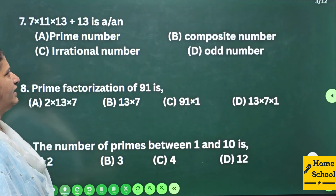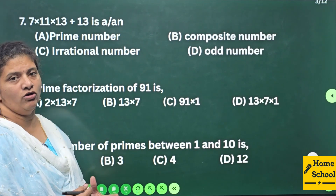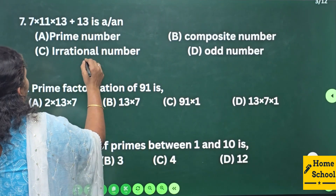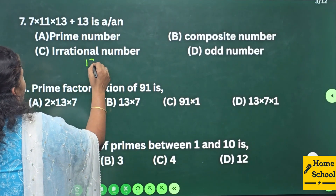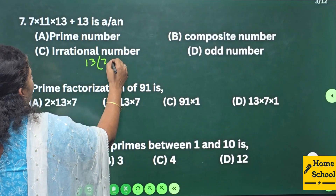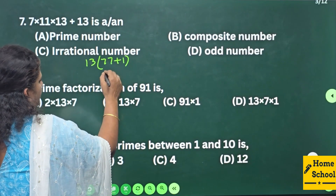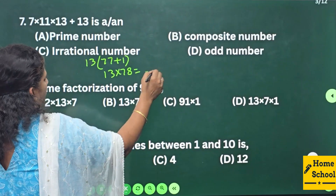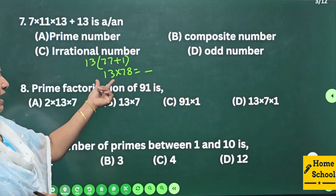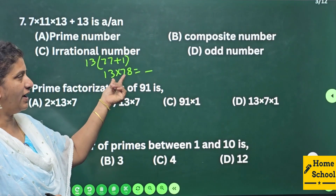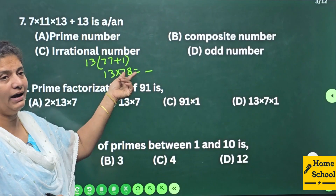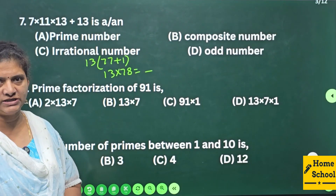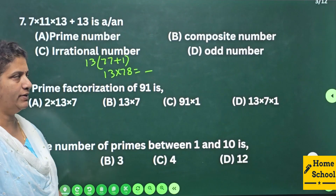Question 7: 7 × 11 × 13 + 13 — is this a or an? We can factor out 13 common: 13 × (7×11 + 1) = 13 × 78. The product of a prime number and a composite number gives a composite number, so this is a composite number.